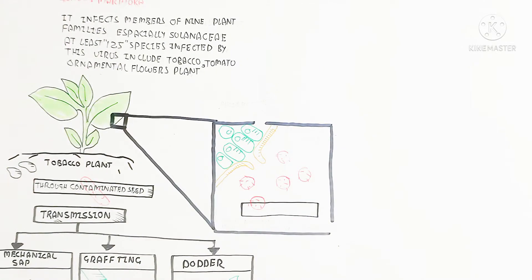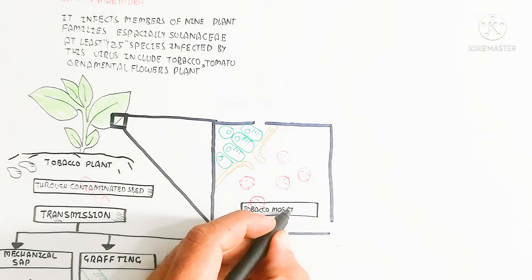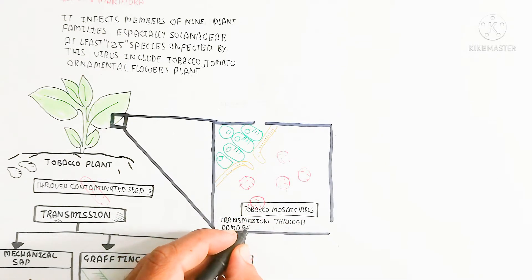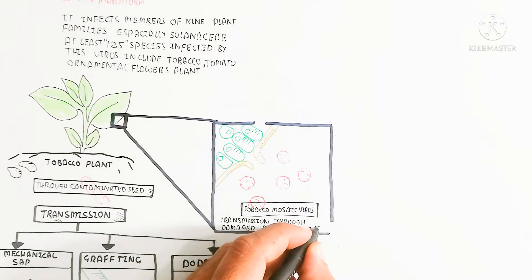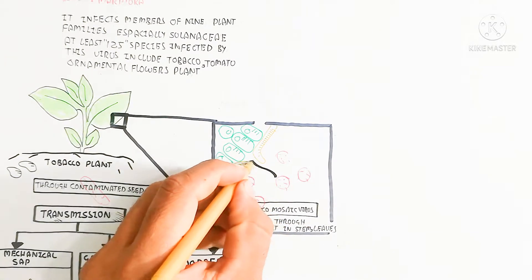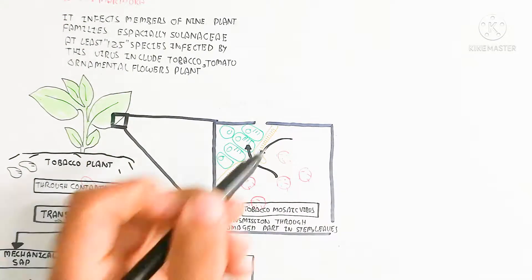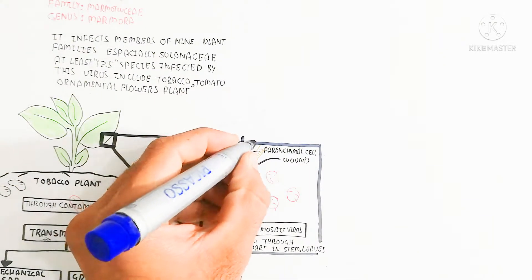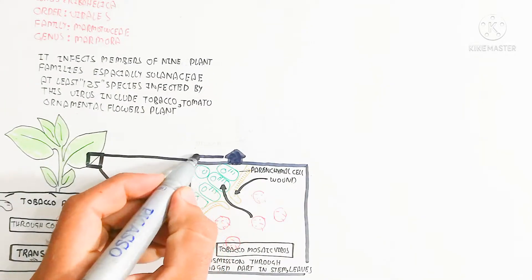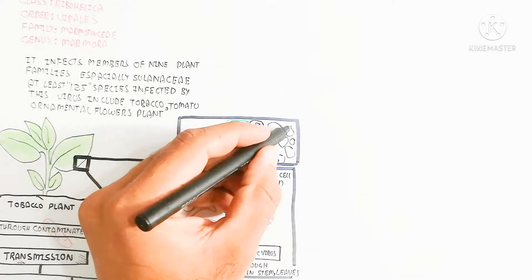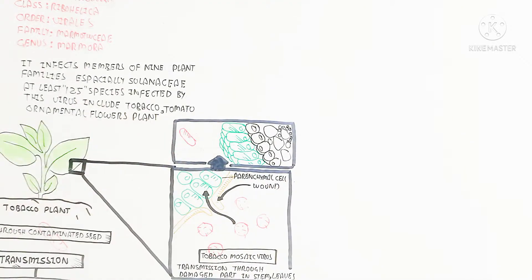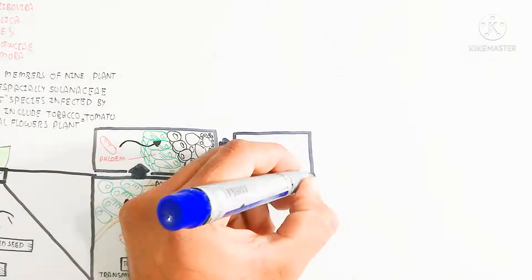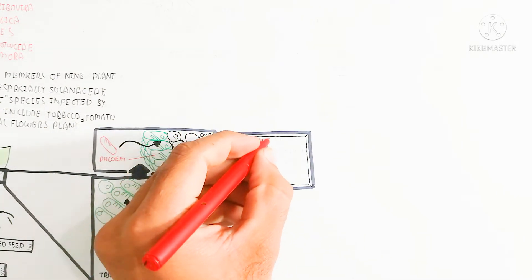As you can see, this is the leaf damage. Due to the leaf damage, the parenchyma cells inside are exposed, and the wound site is used for the entry of the virus. The tobacco mosaic virus is transmitted through damaged parts in stem and leaves. After entering, the virus moves into the parenchyma cells and then enters into the phloem, which is basically food-conducting tissue. It can be transmitted from plant to plant by spreading through the phloem to other parts when plants come into contact.